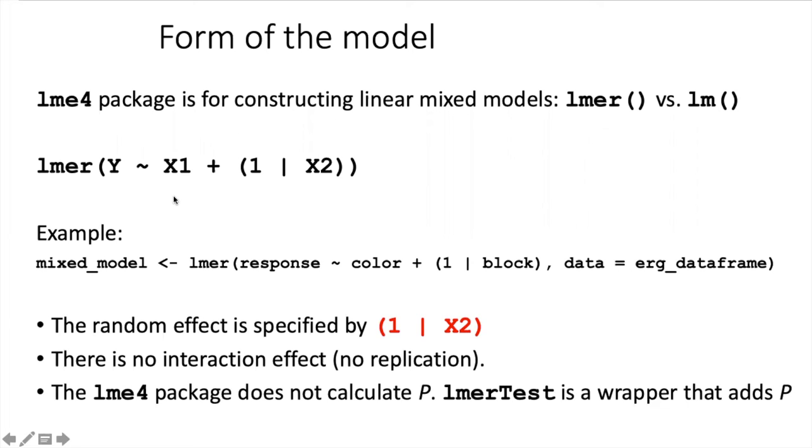In the LMER function, we put in the fixed effect in the same way as we did before, but there's a special notation that's used to indicate that a factor is a random factor, and that's these parentheses, the one, and then the pipe character. In our experiment, this is how that would look.